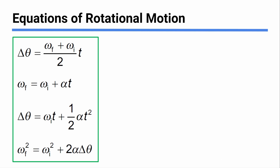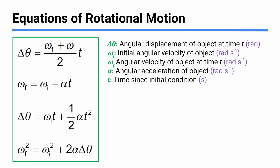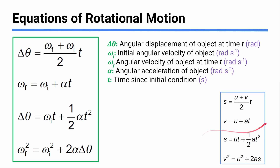Here we have equations of motion for rotation — and don't they look familiar? They really are just SUVAT for rotational variables. Delta theta, with theta being our symbol for an angle, represents angular displacement — how far something rotates in radians. This is all one variable representing angular displacement, not two things multiplied together.